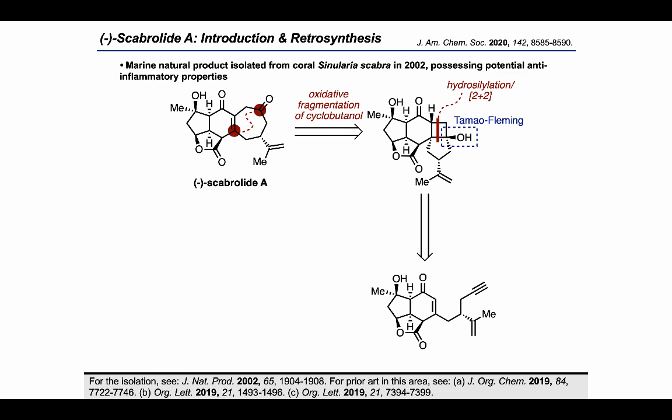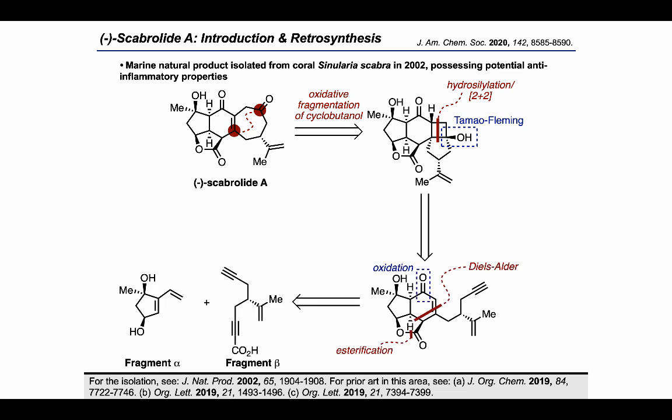Going back further, they envisioned that this intermediate could be further simplified by applying a Diels-Alder reaction on an appropriate precursor, which would require some type of oxidation process to install the ketone. Retrosynthetically cutting by an esterification at the bottom would then allow us to divide this intermediate into two roughly equal-sized pieces, which we'll call fragment alpha and fragment beta.